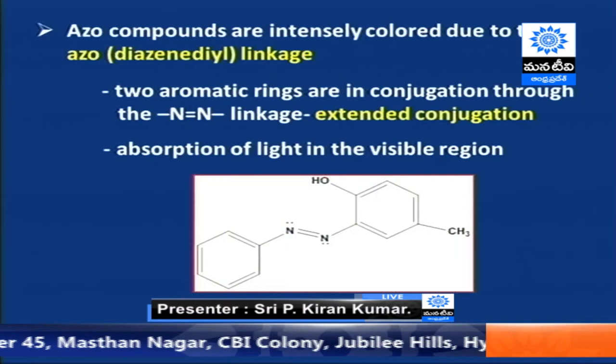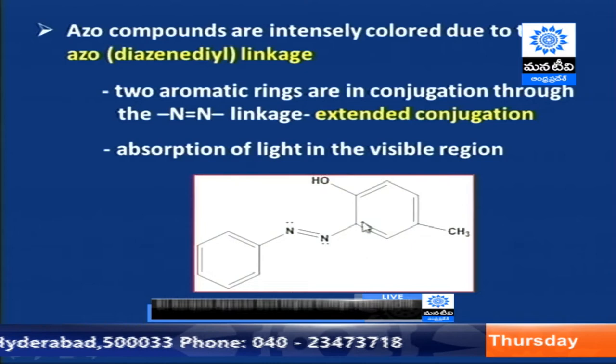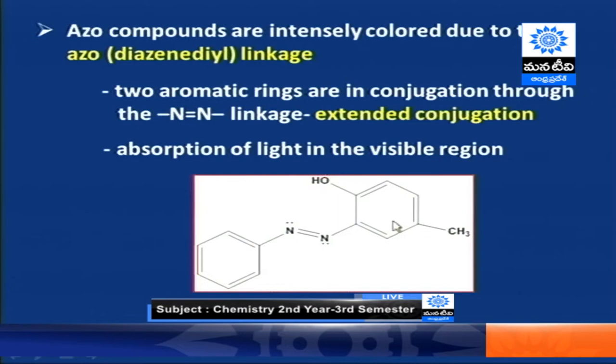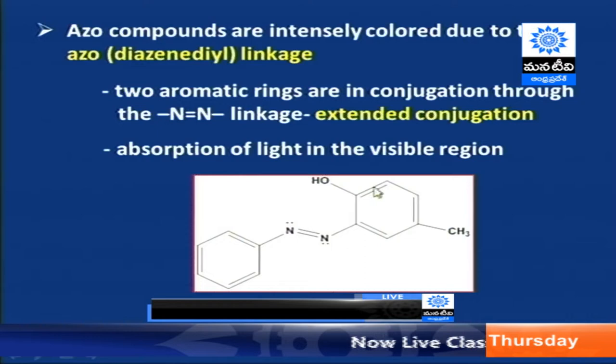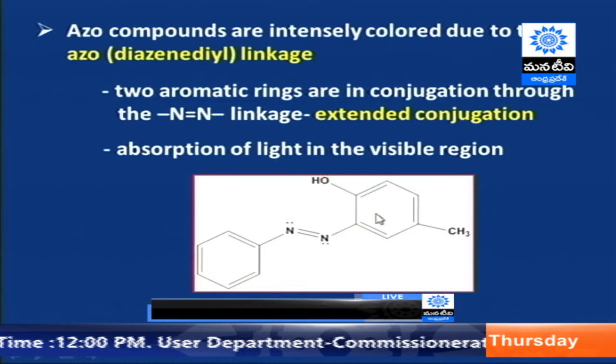Azo compounds have a characteristic color due to the fact that the two aromatic ring systems are in conjugation through the N=N bond. The conjugation is extended beyond one system into the other through N=N. Because of this extended conjugation, they absorb light in the visible region and exhibit a characteristic color.